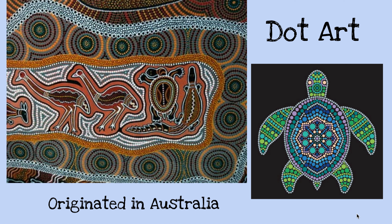The last one we're going to talk about today is dot art. This actually originated in Australia. As you can see this picture — there's a turtle on the right side. It's not just a picture of a turtle that someone drew, but it's just dots. It's a bunch of dots that make up the picture, which is pretty neat. If you get a bunch of dots and put them in a certain pattern or order, you can make a picture that way.